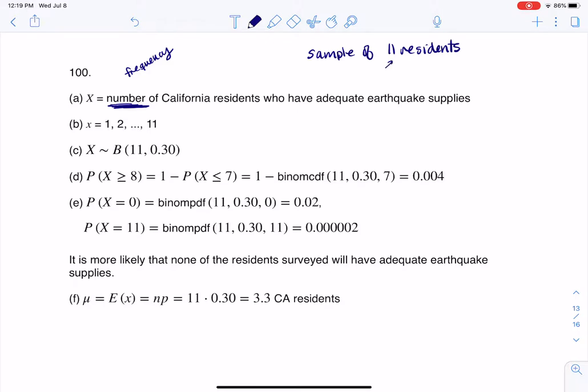Because we're going to ask them, hey, do you have earthquake supplies, and they're either going to tell me yes or no, and that's going to be a success or a failure. But over the entire sample, we're actually going to keep track of the number who say yes, and that is our numerical variable.